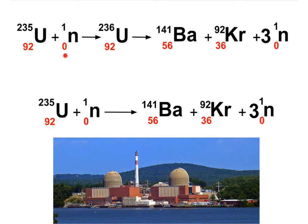Here is a reaction of artificial transmutation. We are shooting neutrons into uranium-235. Uranium-235 is an unstable isotope of uranium and it can undergo natural decay, but the half-life of that decay is several billion years.